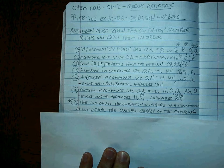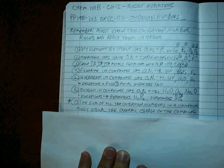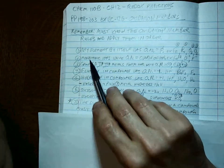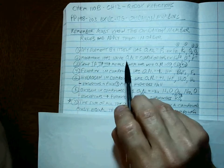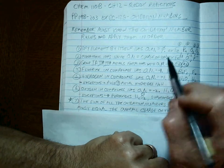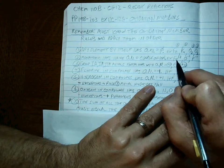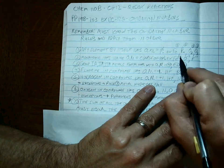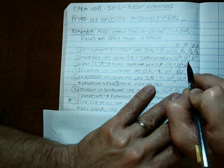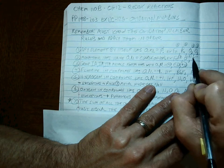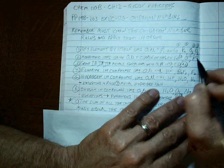Rule number two says monatomic ions — one-atom ions — have an oxidation number equal to the charge of the ion. Here's an example: Fe3+ has the charge, so the oxidation number is the same as the charge. Oxygen is a minus two, fluorine is a minus one.